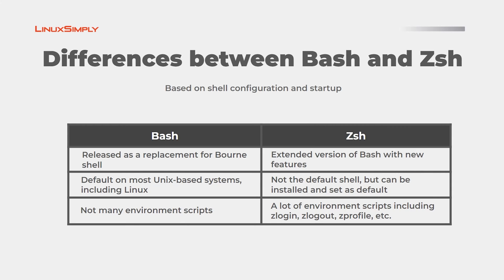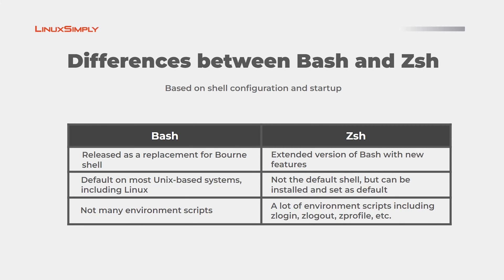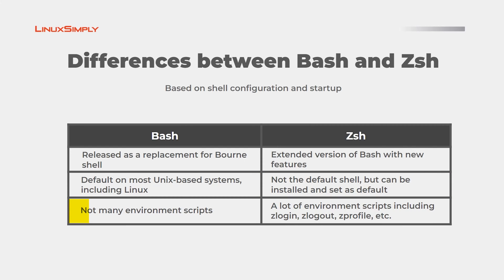The differences between Bash and ZSH can be argued upon different evaluation metrics. First, I will be differentiating them based on shell configuration and startup files. Bash was released as a replacement for the Bourne shell, whereas ZSH is developed as an extended version of Bash with new features. Bash is default on most Unix-based systems including Linux, whereas ZSH is not set as default, but it can be done so using different commands. Also, Bash does not contain many environment scripts, whereas ZSH has a lot of environment scripts, including Zlogin, Zlogout, and so on.